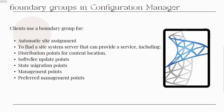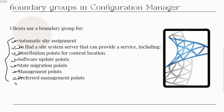When a boundary group is created, site assignment can be done automatically. You can find site systems including distribution points, and content can be distributed locally from that site. Boundary groups also support software update point, state messages, management point, and preferred management point. These are basic features you can assign and enable when creating a boundary group. Now let's jump into the SCCM console to see how to create boundaries, boundary groups, and assign roles.